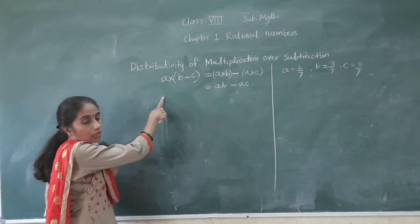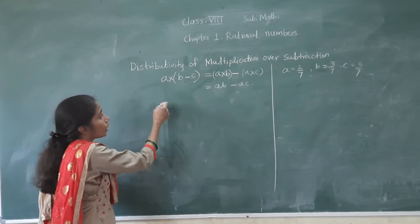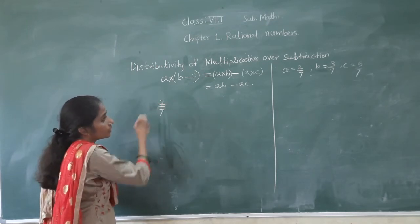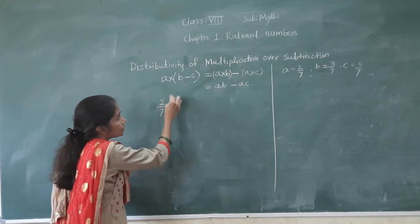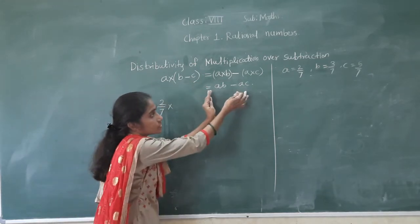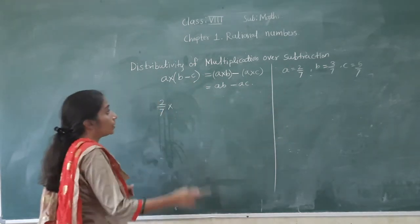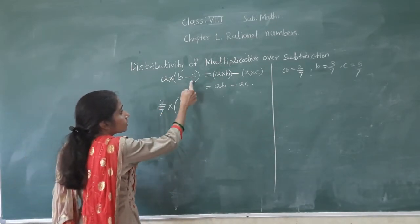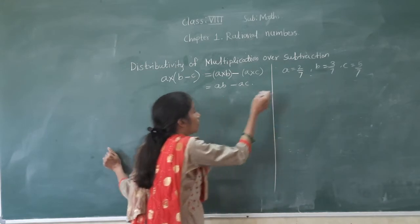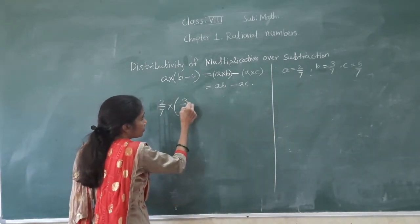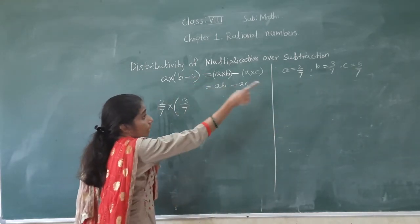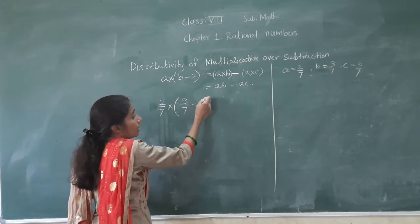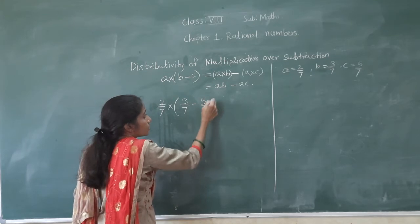What is A? A is 2 upon 7. So here I will take A is equal to 2 upon 7, multiplied by bracket B minus C. What is the value of B? 3 upon 7. Minus C — so C is 5 upon 7.